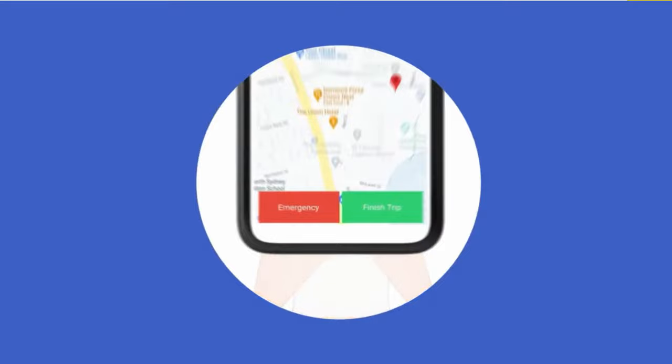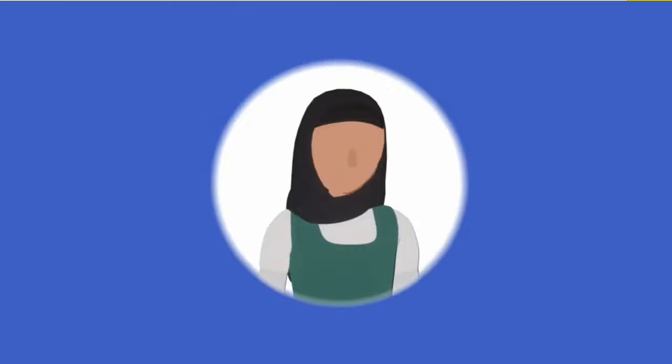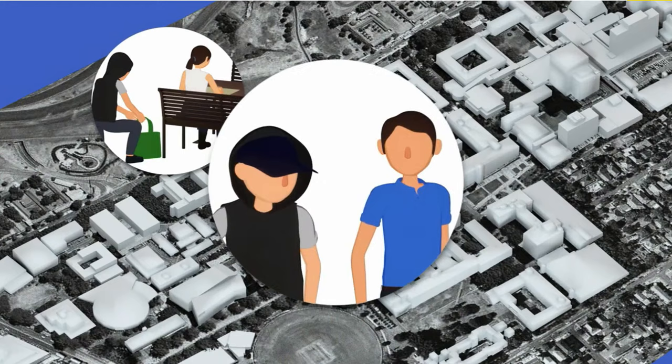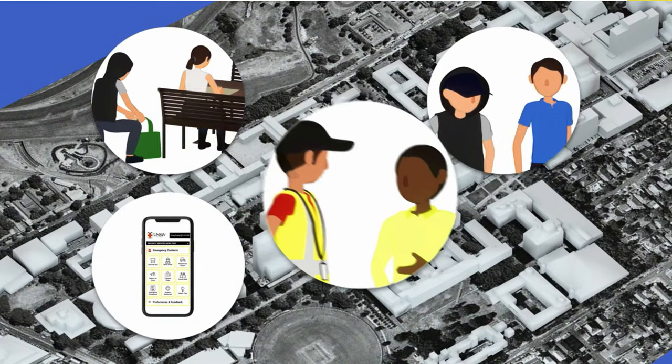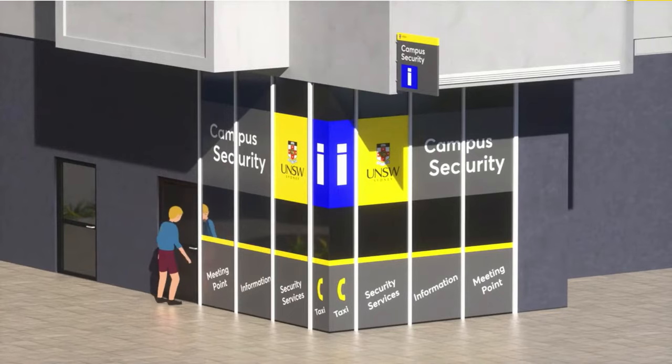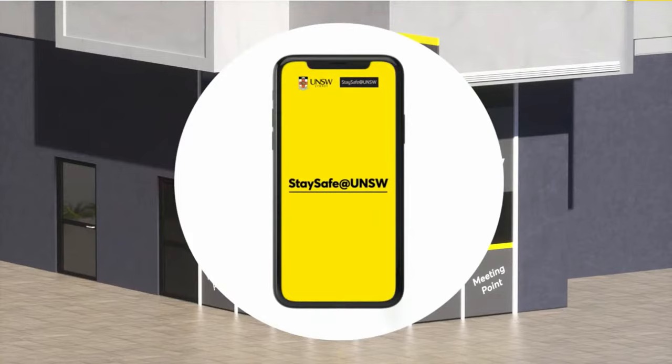In the case of an emergency, press the emergency button to alert your friend that you need assistance from campus security or emergency services. It is important to notify security services if you are a victim of crime or witness suspicious behaviour. You can report a crime via the app, in person or by calling security services. Remember, you can visit us at Gate 2 and download the Stay Safe at UNSW app to access all security services. The app is free to download from the App Store or Google Play.